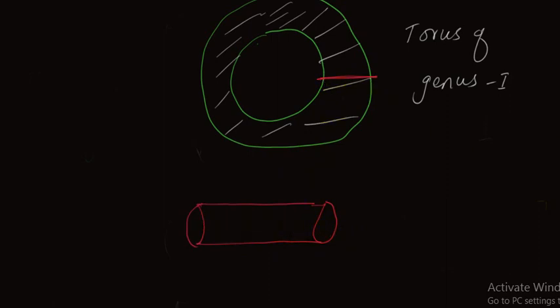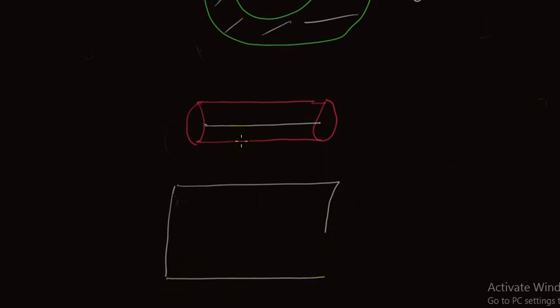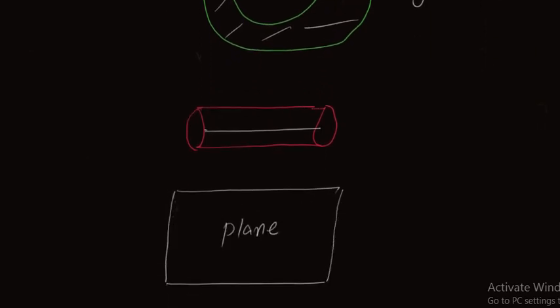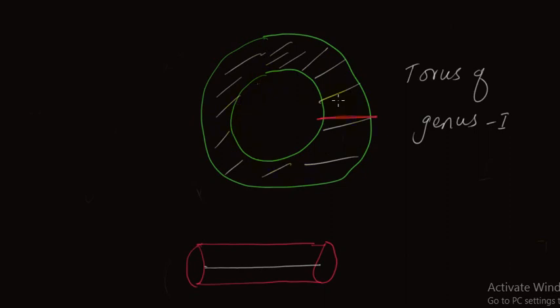Now I modify this shape further. If I cut this pipe at this point and then try to reshape it — meaning if I separate the upper and lower edges — then we will obtain a plane: a flat, plane-like shape. So from a torus of genus 1 we can obtain a plane. This plane is a modified form of the surface of the torus of genus 1. Remember, we are just considering the surface of this torus of genus 1.